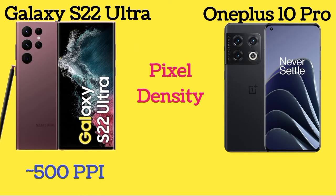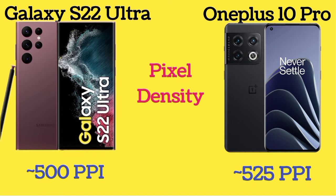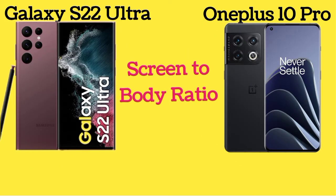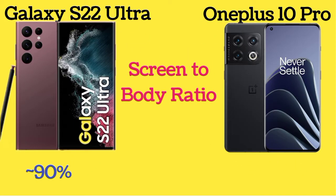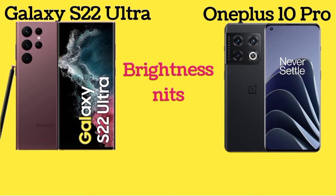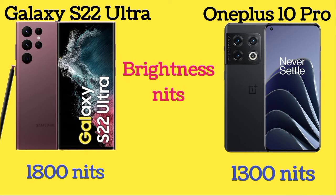Here is the pixel density of both S22 Ultra and OnePlus 10 Pro. The screen-to-body ratio of S22 Ultra and OnePlus 10 Pro is 90% and 92.7% respectively. S22 Ultra brightness is 1800 nits and OnePlus 10 Pro brightness is 1300 nits.